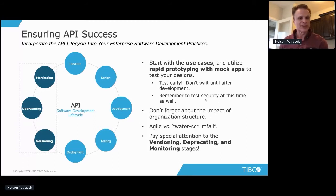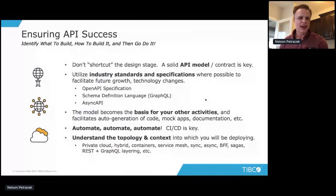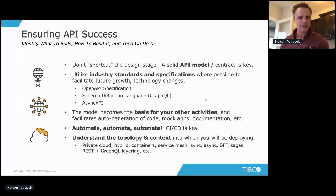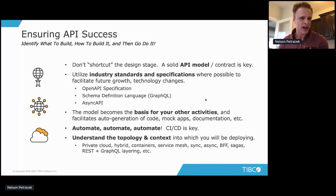Don't forget the cultural and organizational structure aspects — Conway's Law: you build software according to the way your organization is structured, and remember that when building your APIs and running your API program. Don't shortcut the design stage; build a solid API contract and look at all the relevant specifications — OpenAPI specs, AsyncAPI spec, schema definition languages. That contract is the basis of everything else. Automate everything with CI/CD, and when you think you've automated everything, automate again. Consider deployment patterns: public cloud, private cloud, hybrid, service mesh, synchronous vs. asynchronous, back-end-for-front-end patterns, and sagas for choreography.